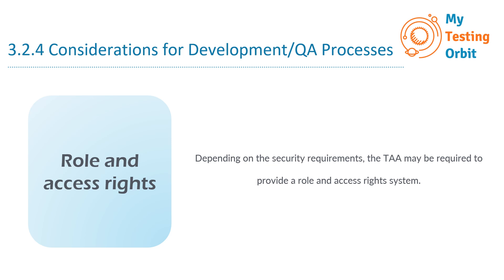Next we have role and access rights. Depending on the security requirements, the TAA may be required to provide a role and access rights system. This provides a structured and secure way to manage user access, protect sensitive data, and meet compliance standards — an essential consideration especially in environments where security is very important.